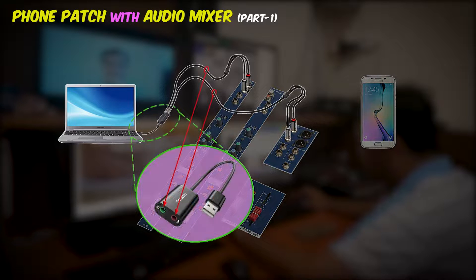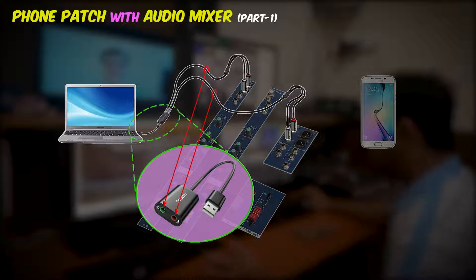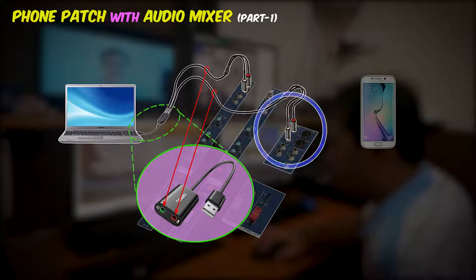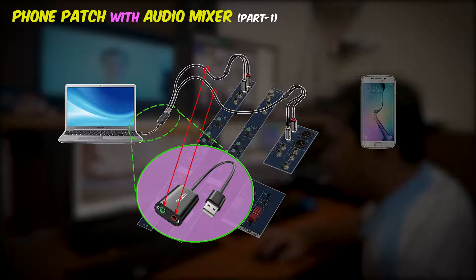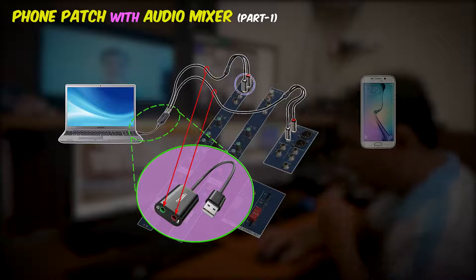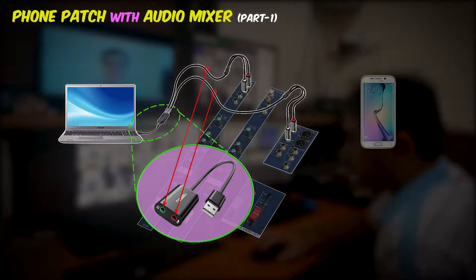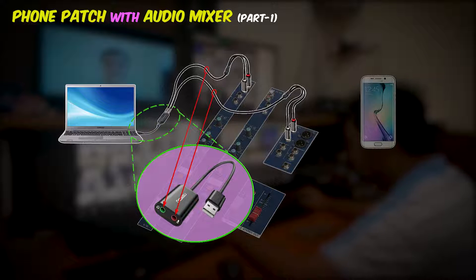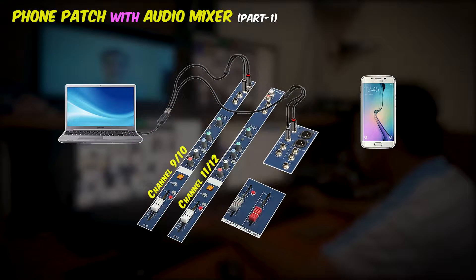I am using a USB audio adapter to separate the mic and the speaker on my laptop. As you can see in the figure, the microphone of the USB audio adapter is connected to the output of the audio mixer, and the speaker of the USB audio adapter is connected to channel 9 and 10 of the audio mixer. This is the connection of the laptop and audio mixer — be sure to connect it right, otherwise there will be a problem later on your phone patch connection.